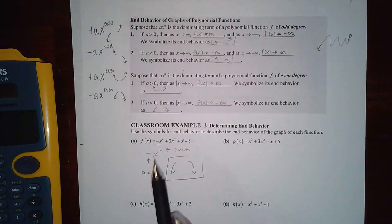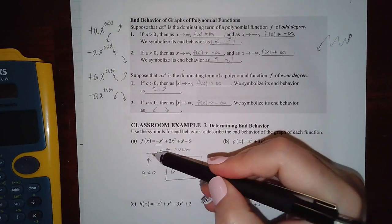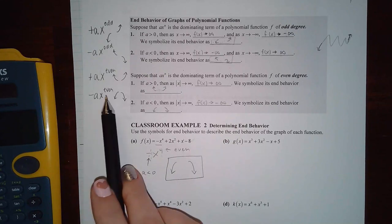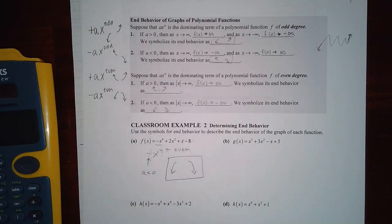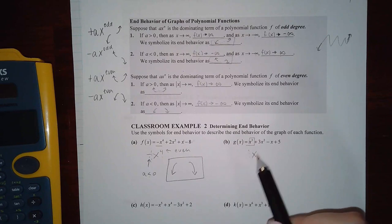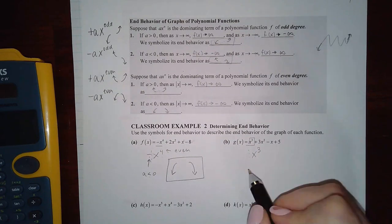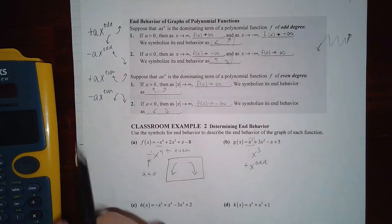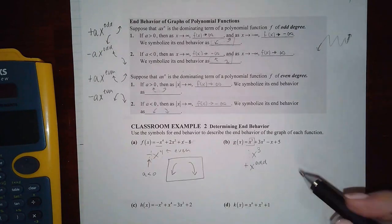So here, notice I have a negative a value. It's actually a negative one, but I have an even. So I have a negative a value and an even, which means it's going to be going forward like that. Now for part B, the highest guy is this one. So this one's got a one in the front, positive and x to the cube. So that's a positive x to the odd. A positive x to the odd should have that end behavior.